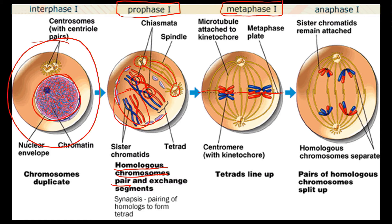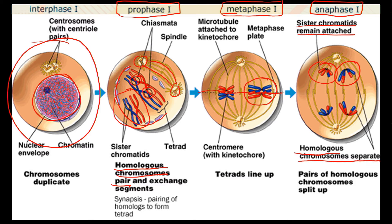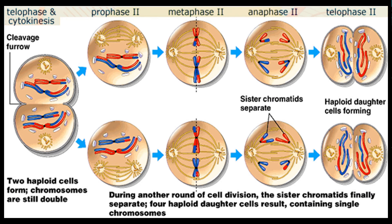Metaphase I is different to what happens in mitosis because the pairs line up along the equator — the homologous pairs go to the equator together. Next we have anaphase, and remember that A means they're moving away from each other. What is moving away from each other? An entire chromosome, because the chromatids remain attached. It's the homologous pairs that split — the homologous chromosomes separate — and that is what reduces the chromosome number.